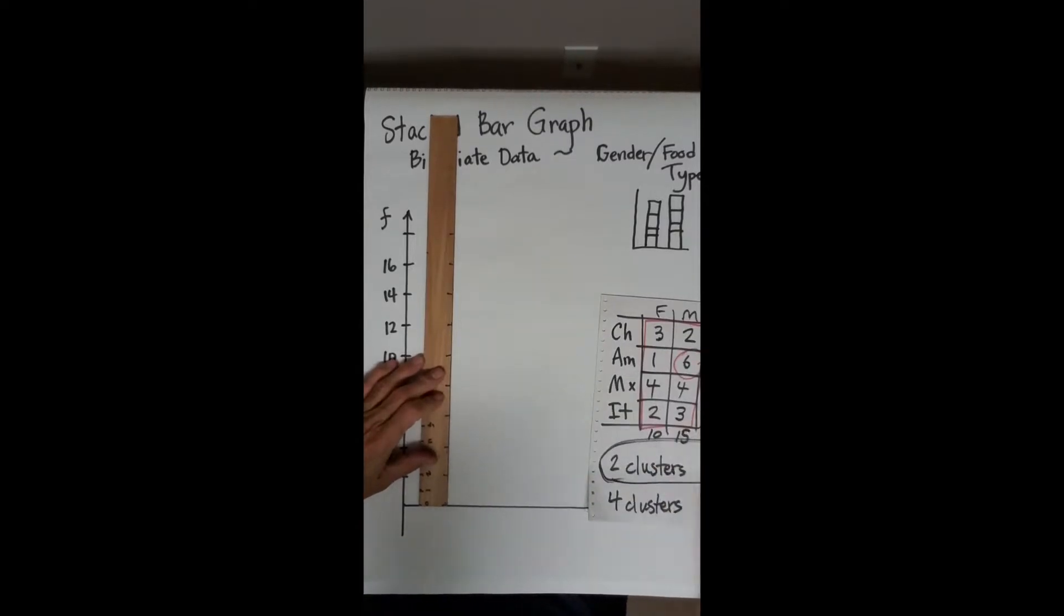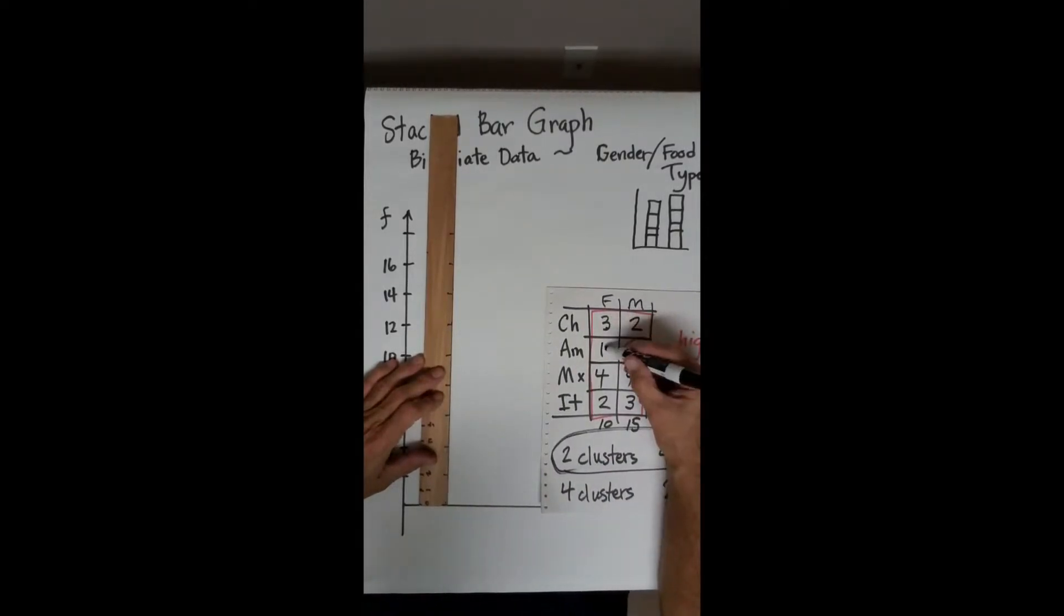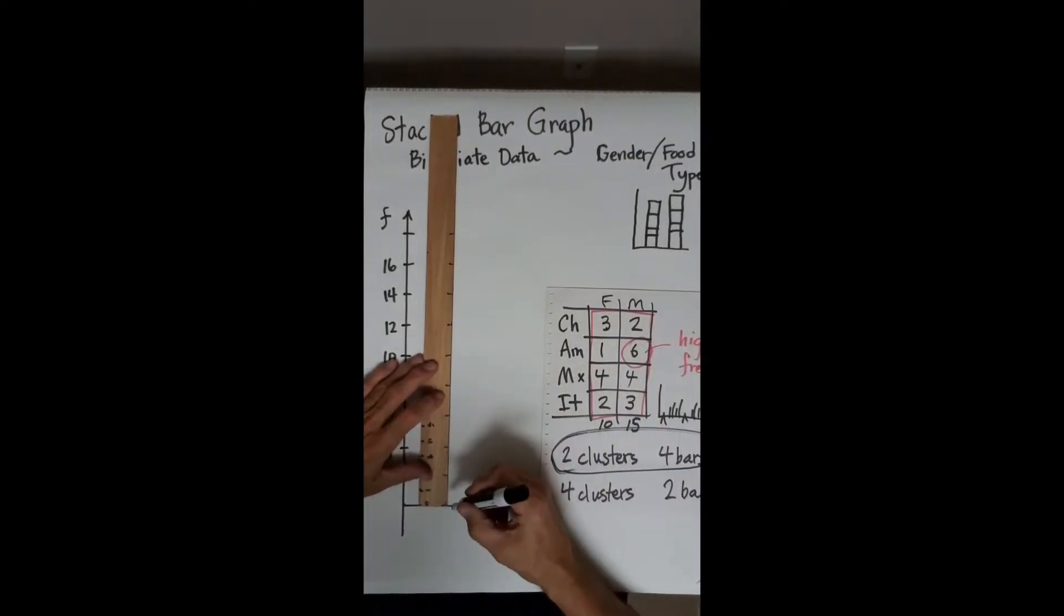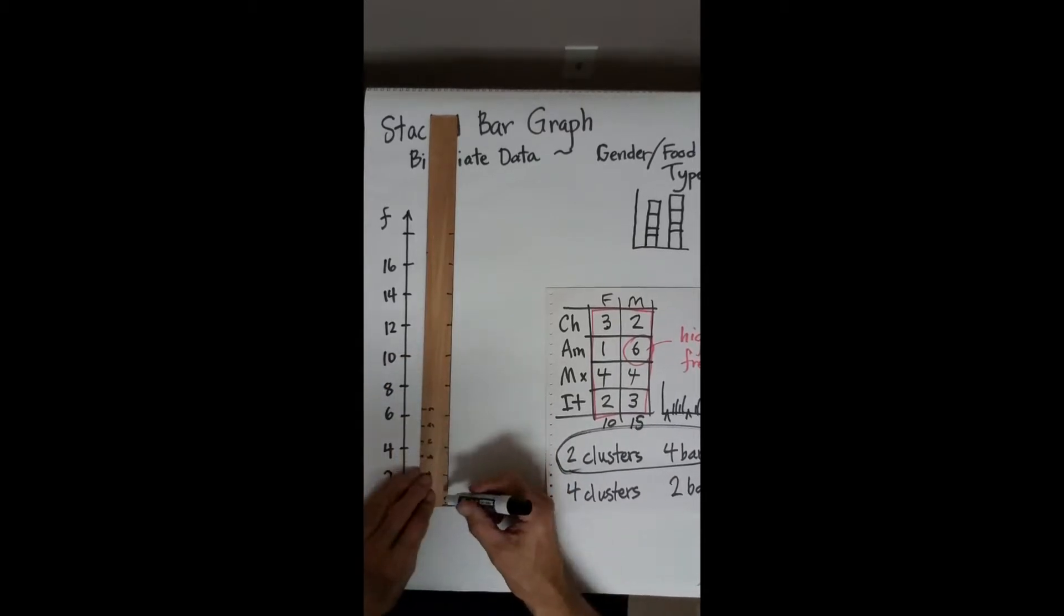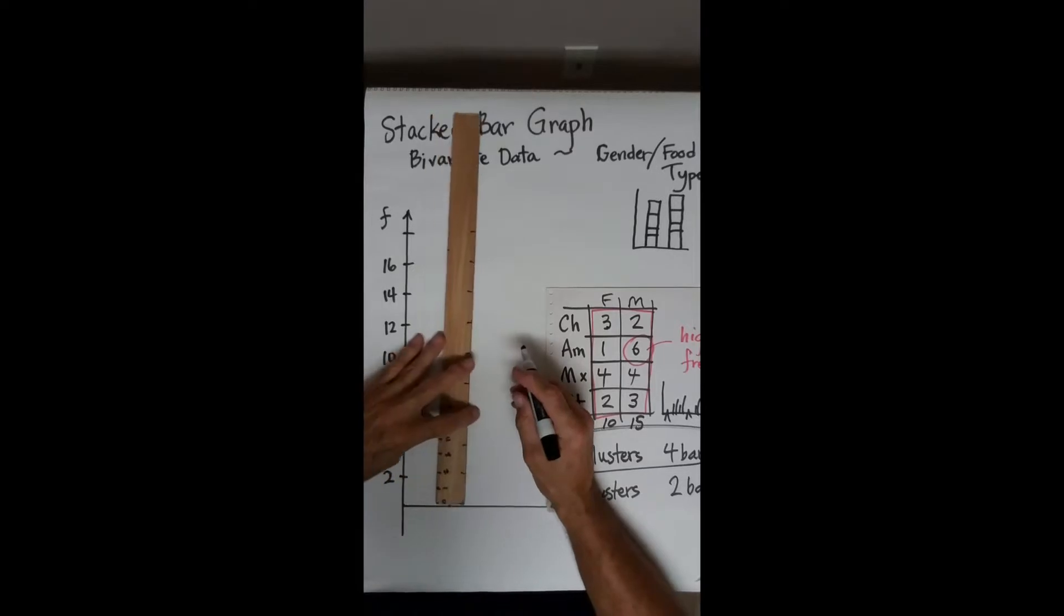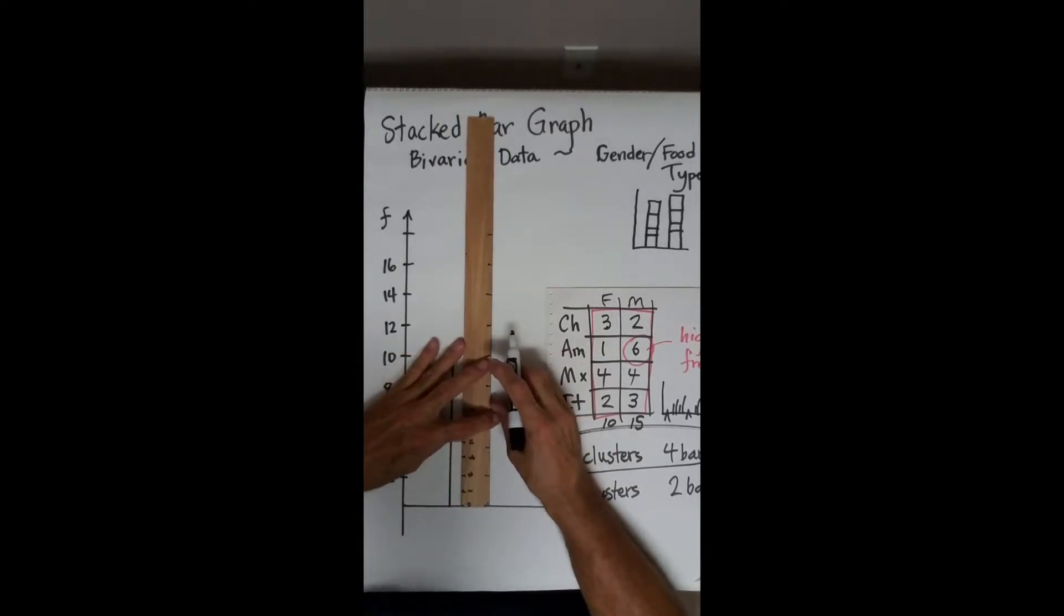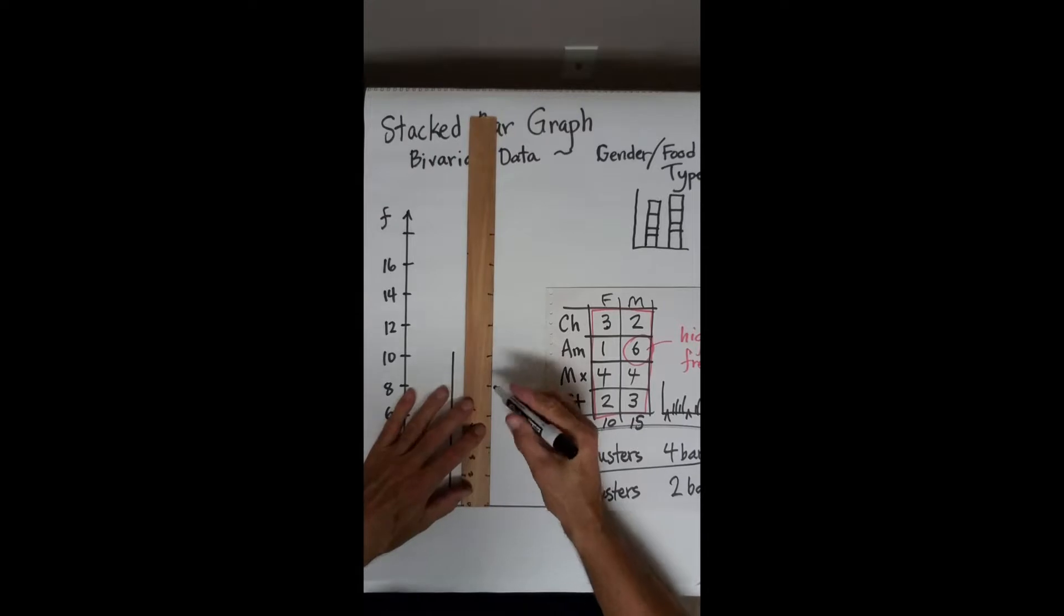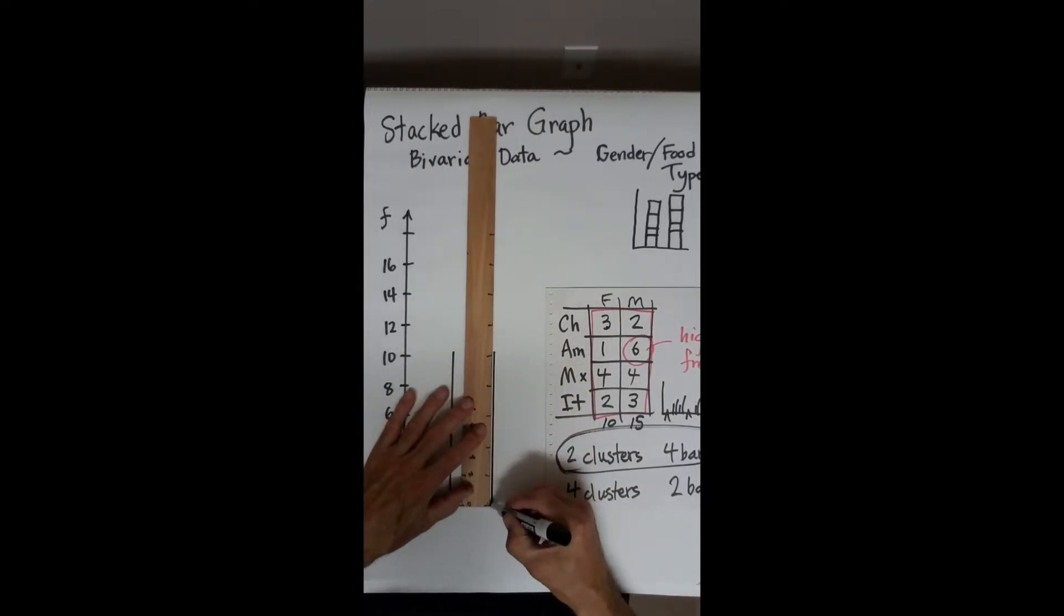The female bar, the female bar, 3, 4, 8, 10. So I need to go up to 10 on my scale, just here. So the female bar goes to there. I'll make it a little bit wider than usual.